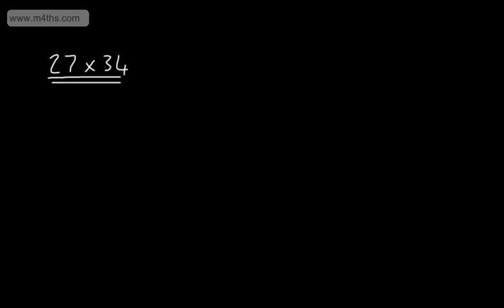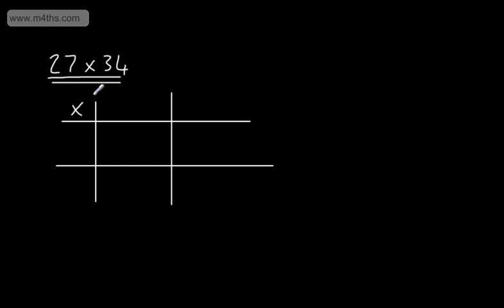This is an alternative for long multiplication. So if I set up a grid, I'm going to have two columns, one here and one here, and I'm going to have two rows, one here and one here. I'm going to put the multiplication sign in the corner, and at this stage, I can decide whether I put the 27 along the top or the 34.